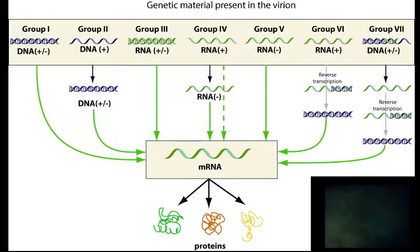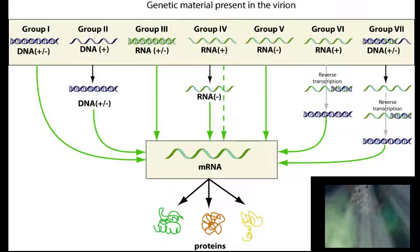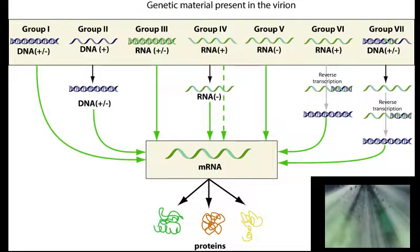Group 3: Double-strand RNA viruses — example: reoviruses.